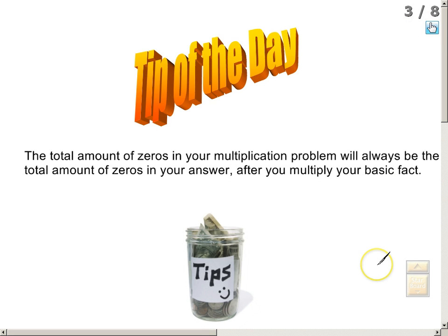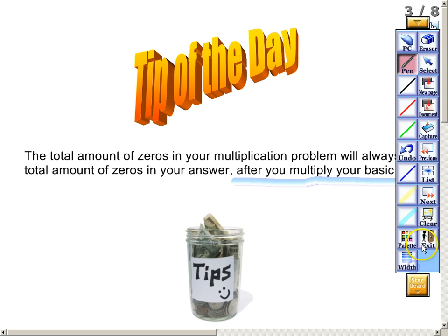Here's something you will want to write in your notes — it's the tip of the day for this video. It's important to know that the total amount of zeros in your multiplication problem will always be the total amount of zeros in your answer after you multiply your basic fact. That is really, really important to remember.